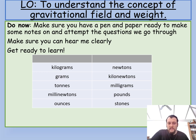So what you'll first notice is here there are 10 different words: kilograms, grams, tons, millinewtons, ounces, stones, pounds, milligrams, kilonewtons, and newtons. So what I'd like you to do is tell me which ones are masses and which ones are weights. So very quickly pause the video if you want. I'm going to move on now, but do make sure you at least have a go at that.